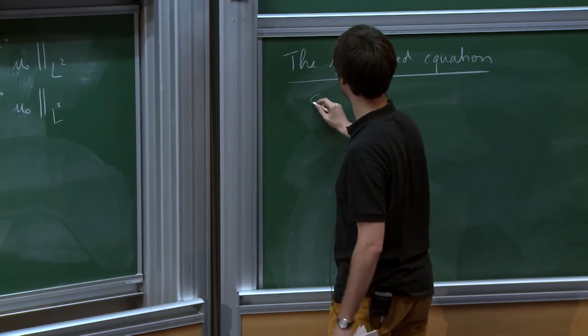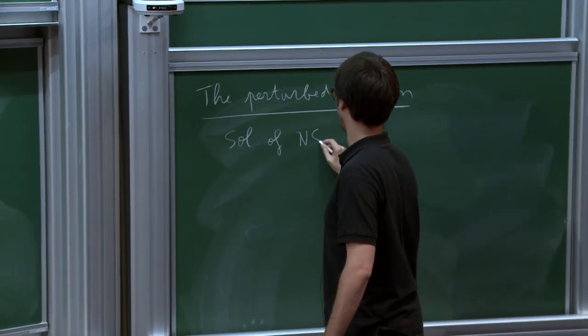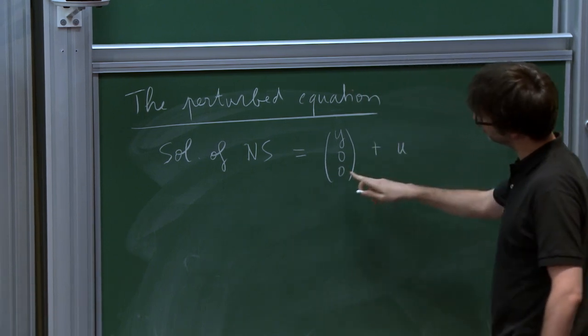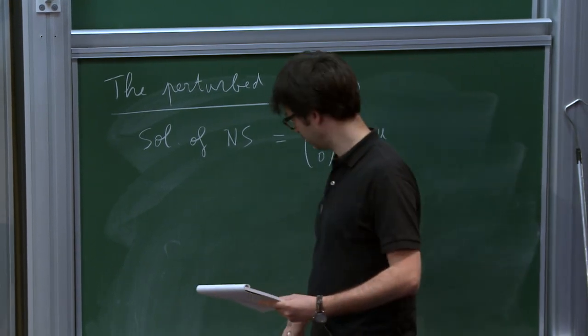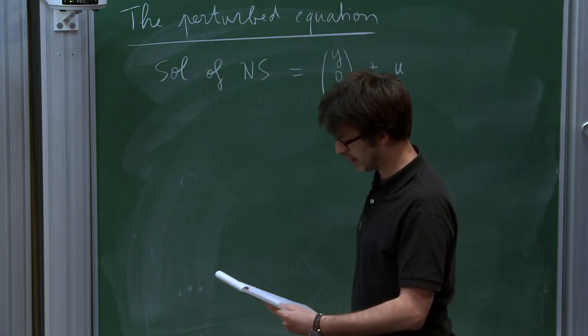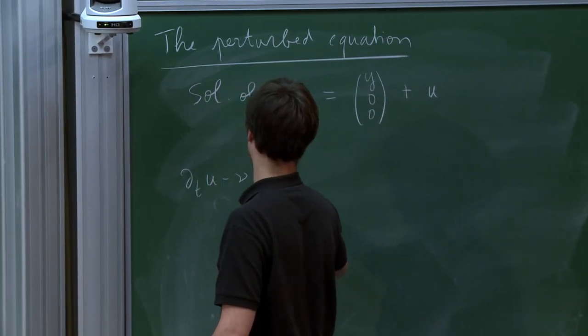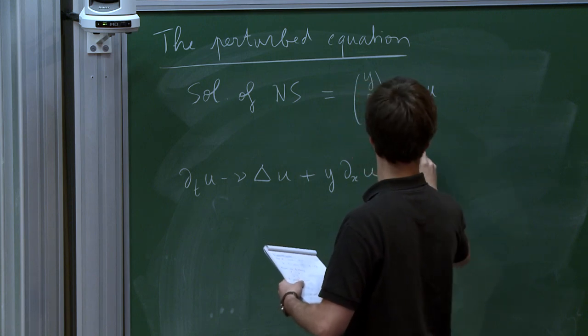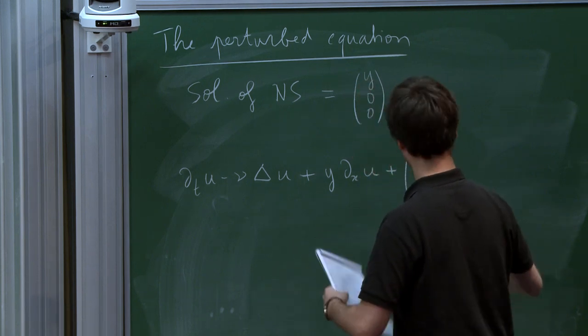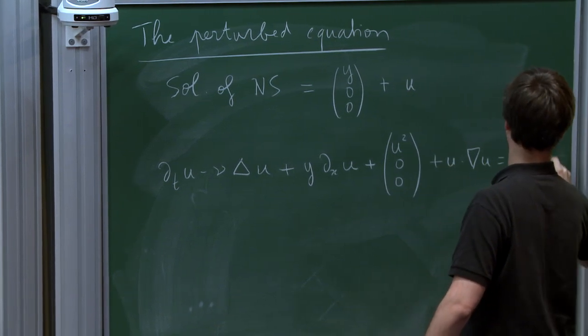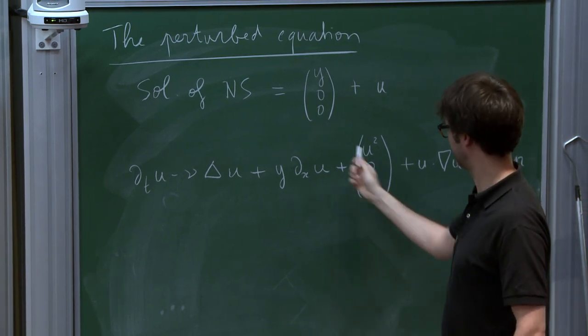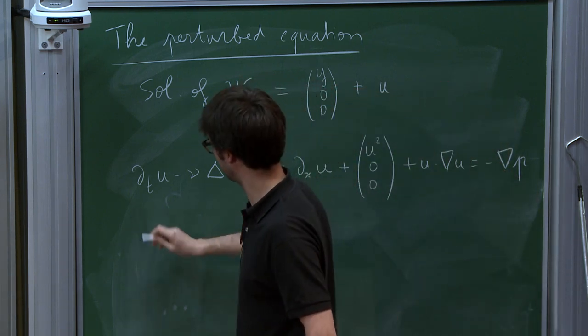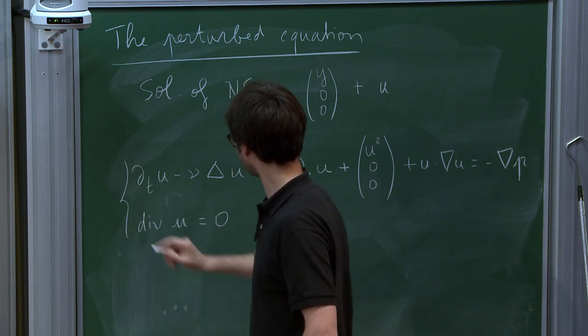It strikes me that these are these ideas of Trefethen of non-self-adjoint flows, where they're large transients. Oh yeah, so I'm going to explain that. It's indeed the fact that the linearized problem is not self-adjoint that gives transient growth, and which is ultimately, I think, responsible for this difference depending on the topology you consider. So I'm going to try and explain that. Okay, so the perturbed equation. So, as I was saying, we consider a solution of Navier-Stokes of the form Couette, that is y plus u. So now u is the perturbation of Navier-Stokes. Okay, so if you do a small computation, you realize that u solves this equation. Okay, and so this part is not self-adjoint.